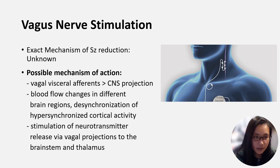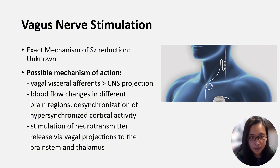Studies have shown VNS produces EEG desynchronization. Also, increased release of GABA and glycine by brainstem and subcortical nuclei, and a decrease in glutamate, may contribute to its effectiveness.